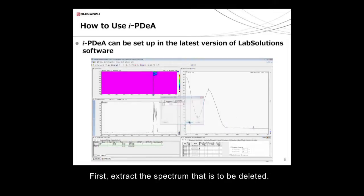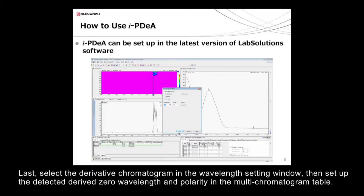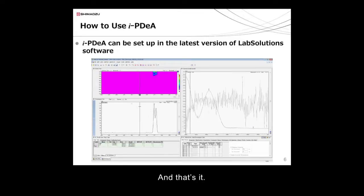First, extract the spectrum that's to be deleted. Next, implement the first derivation using this spectrum. Last, select the derivative chromatogram in the wavelength setting window, then set up the detected derived zero wavelength and polarity in the multi-chromatogram table. And that's it!